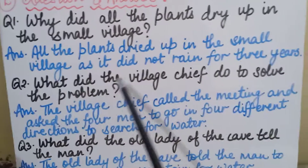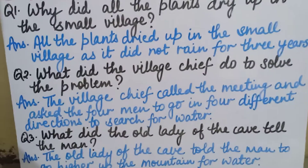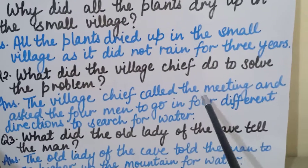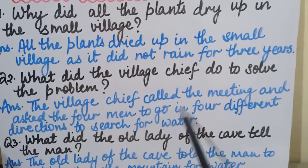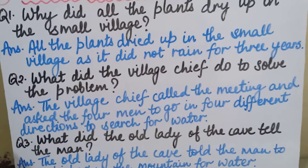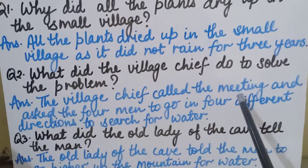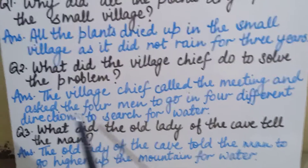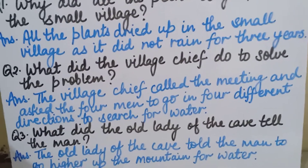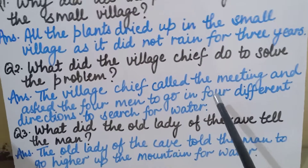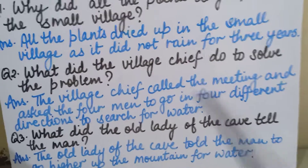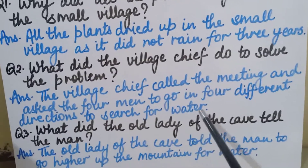Second question: What did the village chief do to solve the problem? The correct answer is: the village chief called the meeting and asked the four men to go in four different directions to search for water. He sent one person in each different direction to look for water.